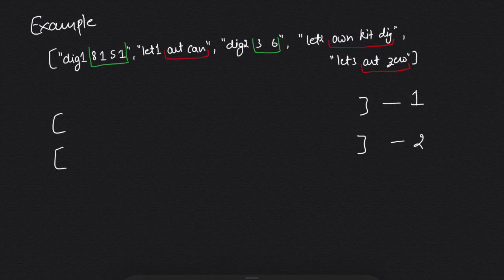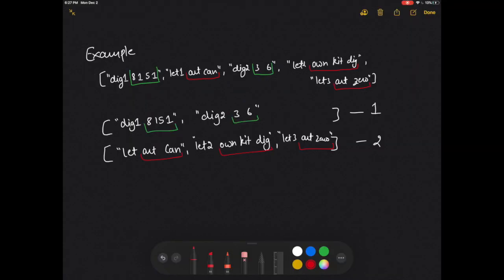After splitting the digit-logs and the letter-logs, our arrays will look like this. So if you see it very clearly...